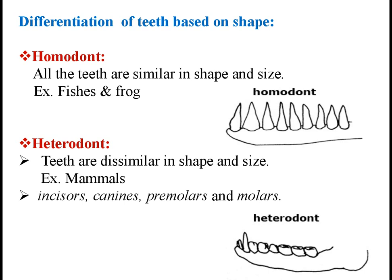The second type is heterodont. Hetero means different, odont means teeth. In mammals, teeth are dissimilar in shape and size, as seen in the diagram. Hence known as heterodont. Different types of teeth are known as incisors, canines, premolars and molars.